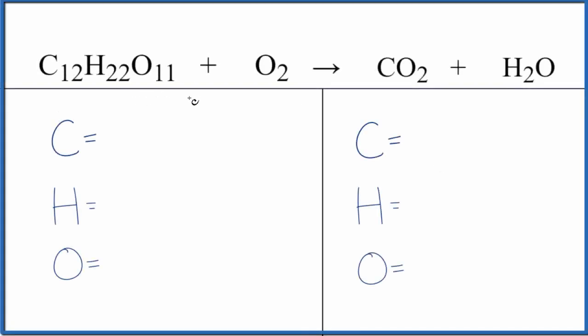Let's balance the equation for the combustion of sucrose, that's C12H22O11 plus O2. Sucrose is table sugar, so this is a combustion reaction because we have this hydrocarbon here, carbons and hydrogens, there's an oxygen in there too, and then we have it combining with oxygen gas O2 to form carbon dioxide and water. So this is called organic combustion.